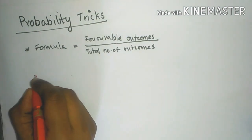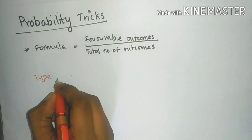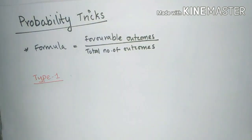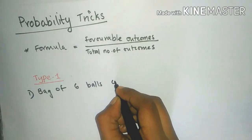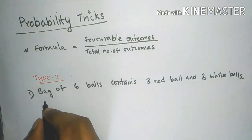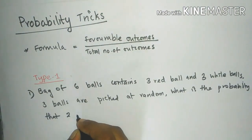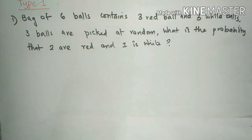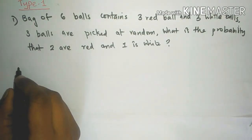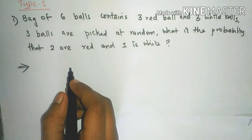We are going to discuss the type of questions. First, we will discuss the type 1 question. What is the probability that 2 are red and 1 is white?